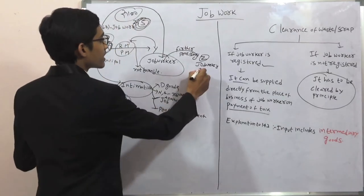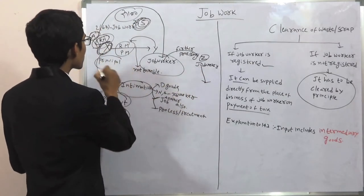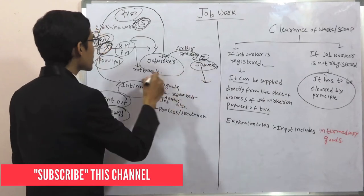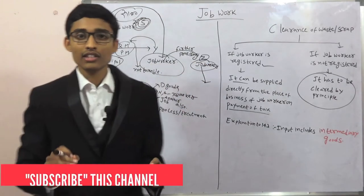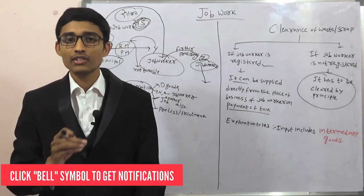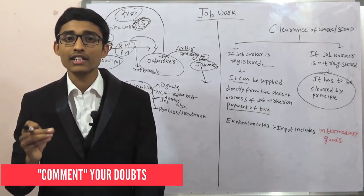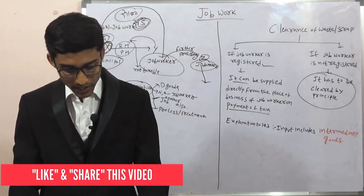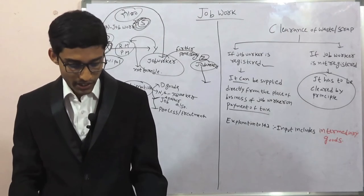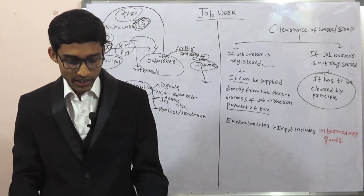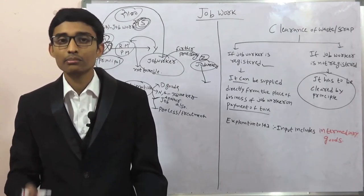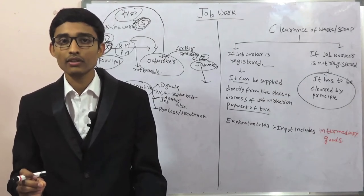The job worker can also directly sell the goods without bringing them to the premises of the principal, provided the place of the job worker is registered as an additional place of business by the principal. However, the principal cannot mention the place of the job worker as an additional place of business if the job worker is already registered. If the job worker is already registered, then the premises of the job worker shall not be declared as an additional place of business. The principal is also responsible for keeping account of goods sent.